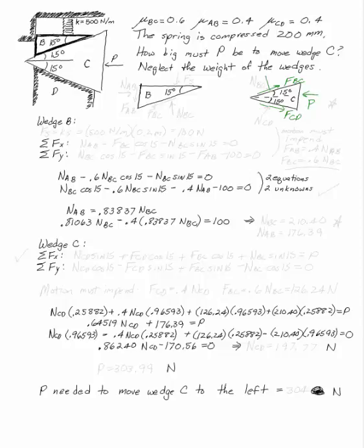have to be opposing that motion and they have to be accompanied by the normal forces. Once we know which direction the friction forces go in, we can take equal and opposite forces on the other wedge and now look at what other forces act on wedge B.